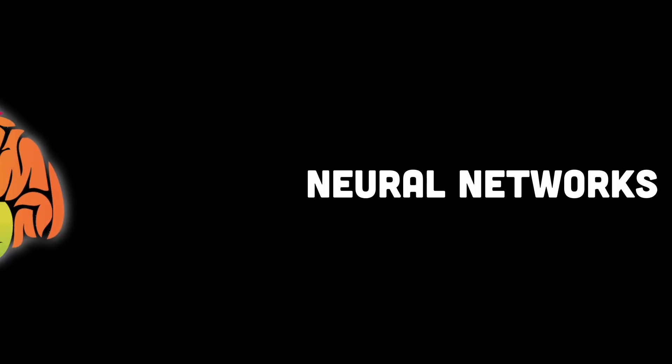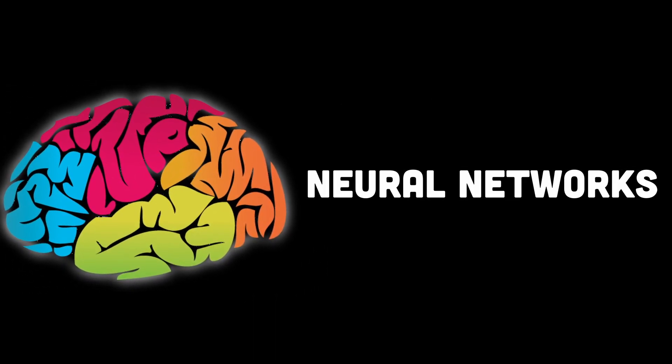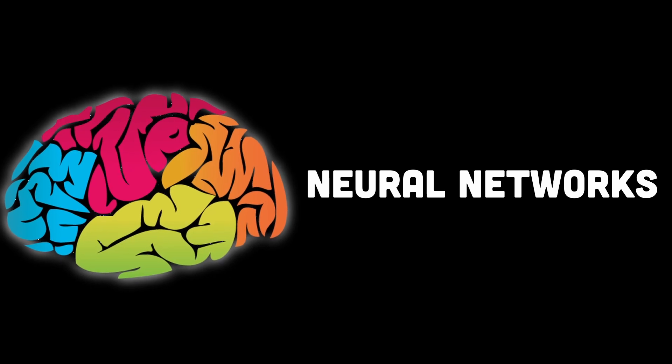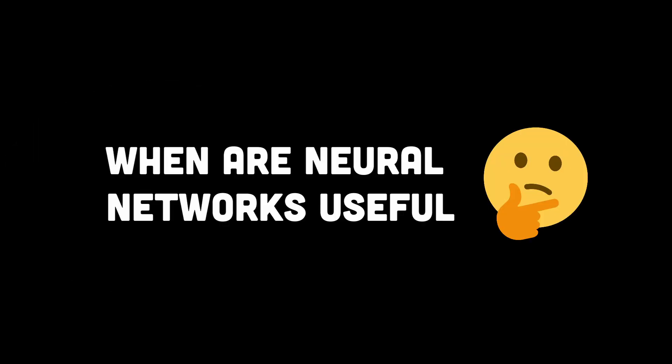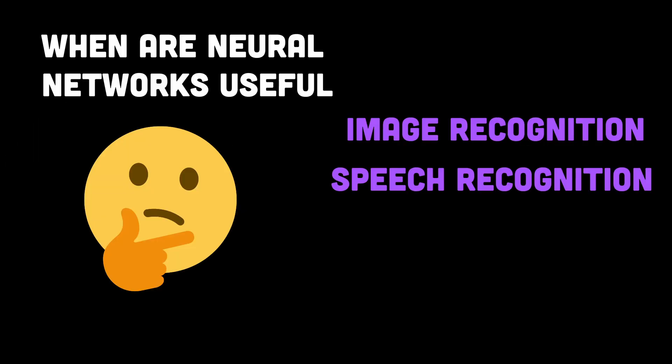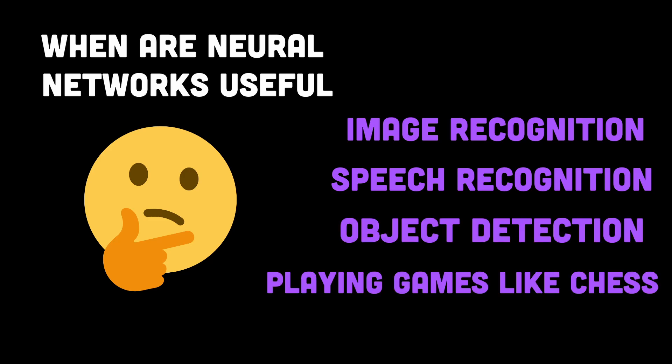Neural networks are a type of computer algorithm designed to mimic the way the human brain processes information. They are commonly used for tasks such as image and speech recognition, object detection, playing games like chess, and more.